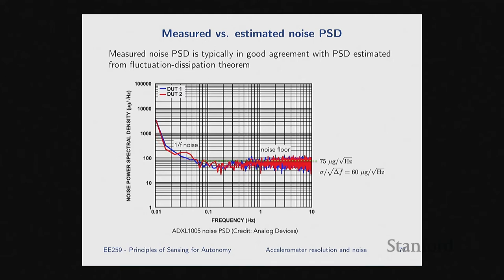They tested two different devices showing basically the same noise, and then the green dotted line is the average — 75 micro-G per root Hertz from measurements. Using the simple model for the noise floor, you get 60 instead of 75, but order-of-magnitude wise you're very close. So if the measured curve is not available, you can use the simplified model to estimate noise using the proof mass, omega zero, and a few other parameters.